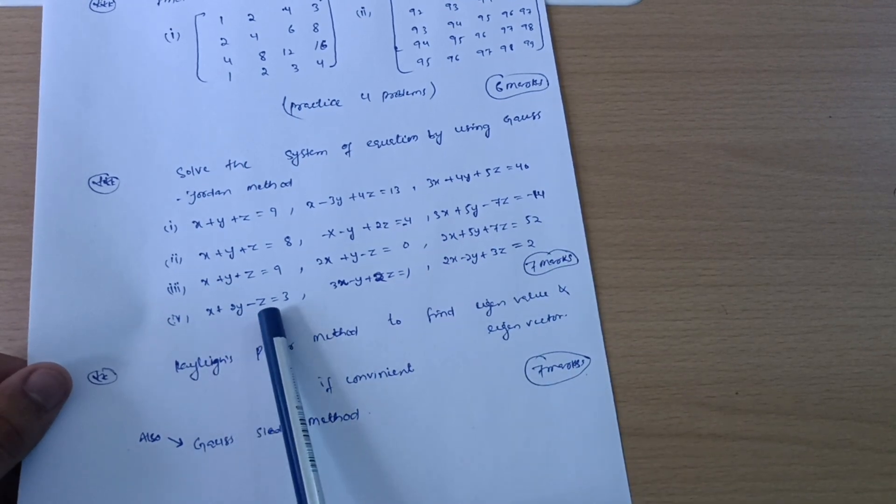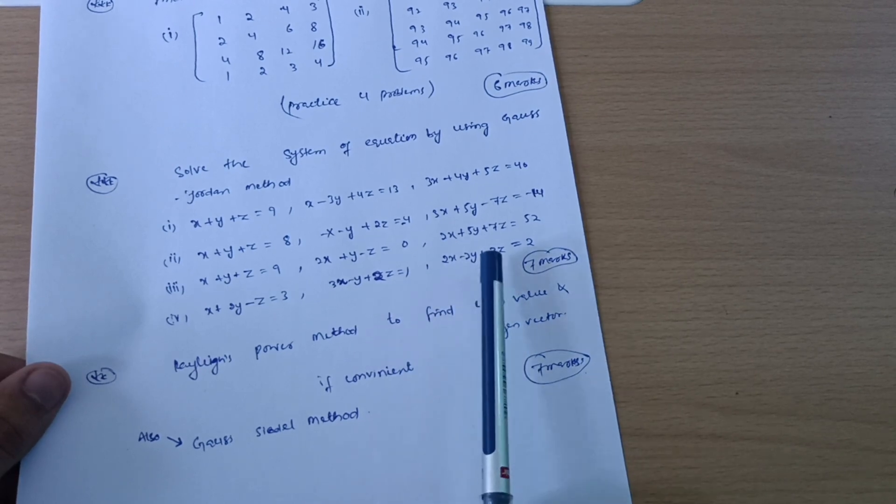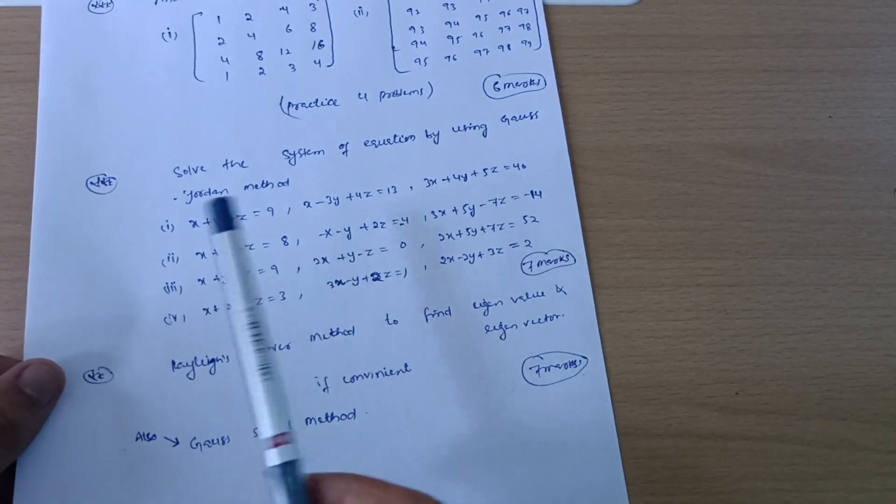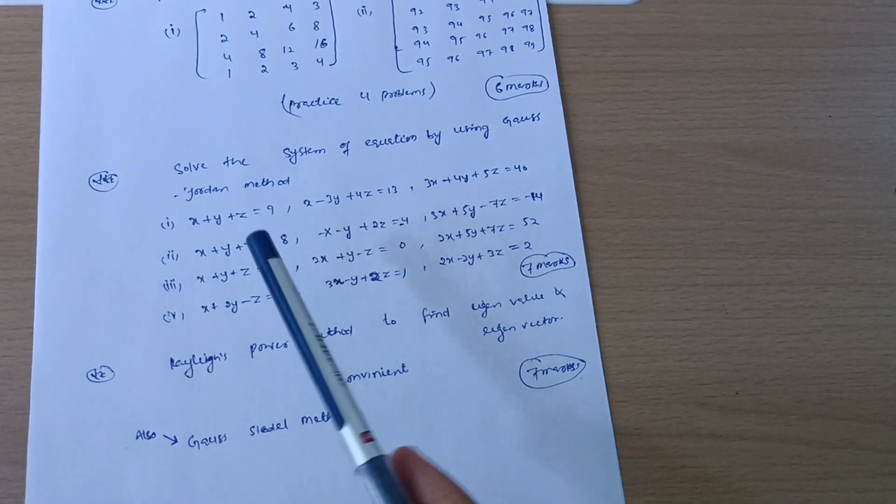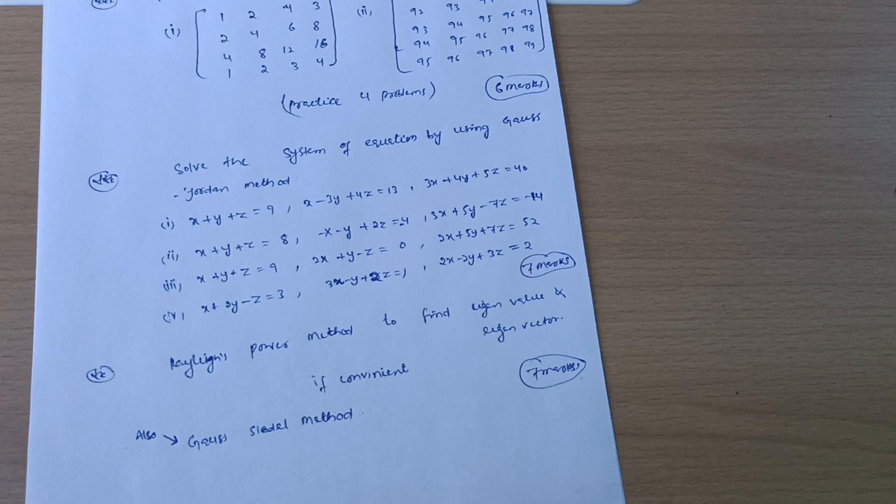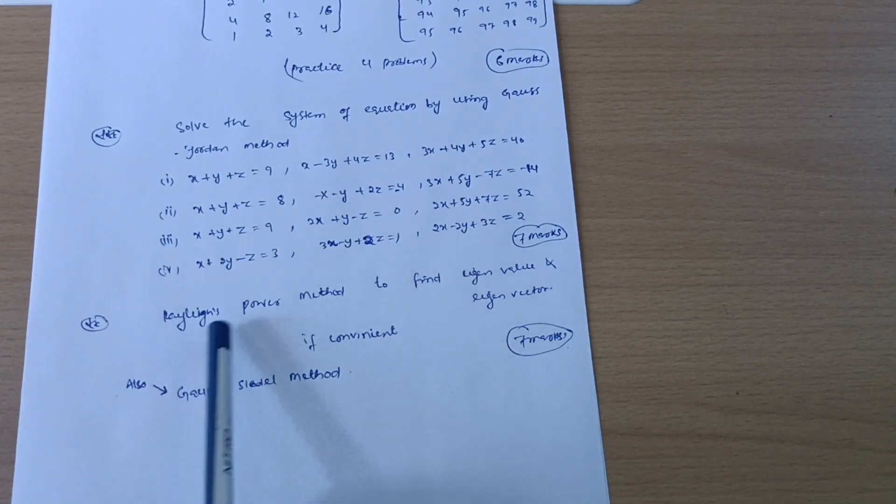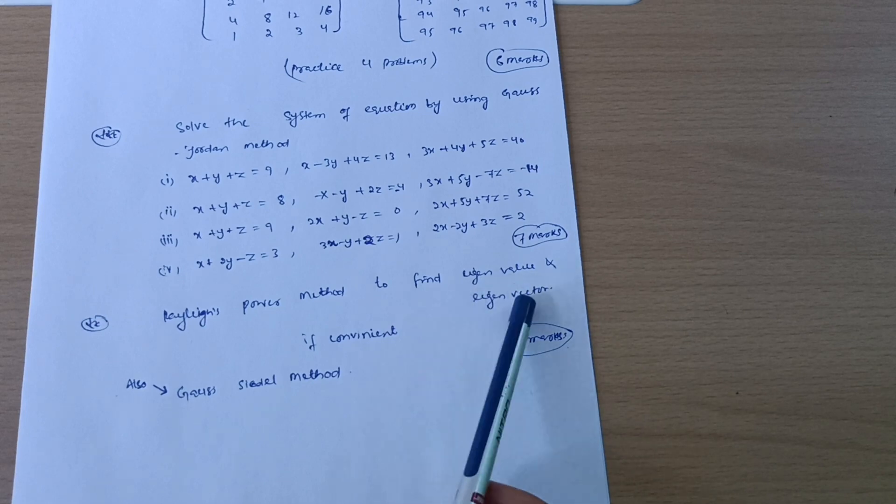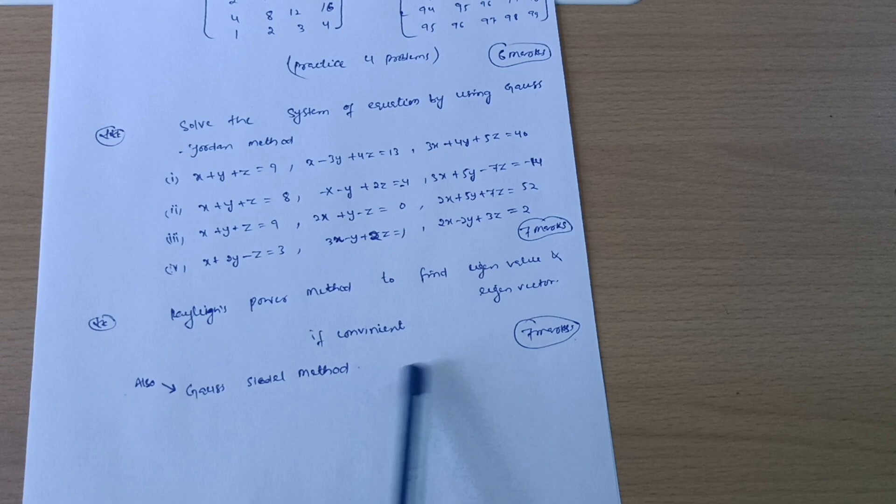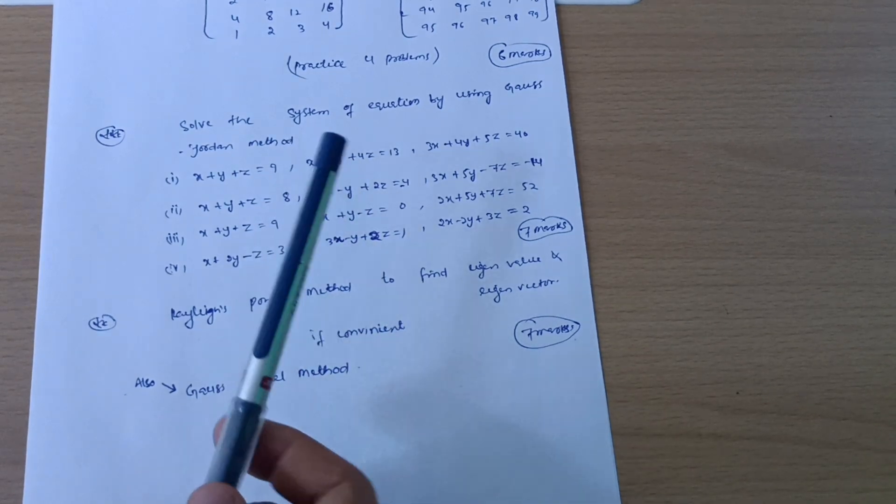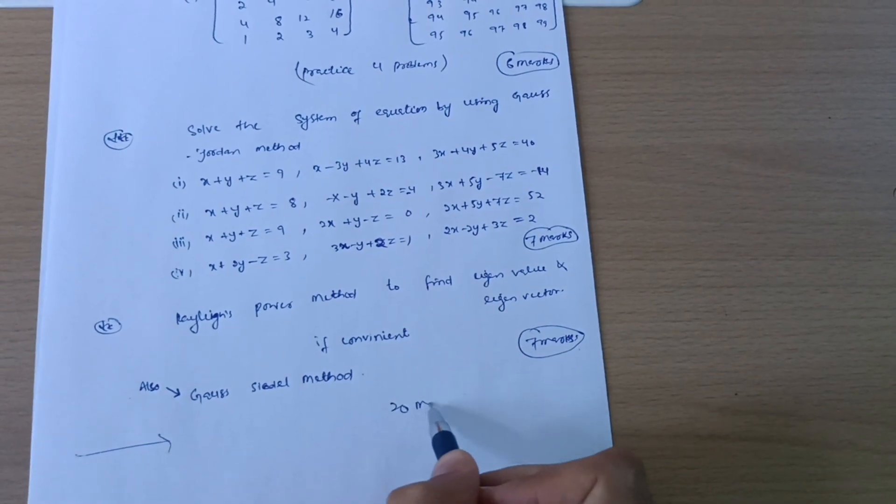x plus 2y minus z is equal to 3, 3x minus y plus 2z is equal to 1, 2x minus 2y plus 3z is equal to 2. These are system of equations which you have to solve by Gauss-Jordan method. It is seven marks question. Definitely VTU will ask one among these questions, so you should practice these four questions from Gauss-Jordan method. And also if you are convenient with the Rayleigh's power method to find eigenvalue and eigenvector, go through it. And you can also refer Gauss-Jordan method which also carries seven marks. So you should get 20 marks from module fifth. This is compulsory to get 20 marks from module fifth.